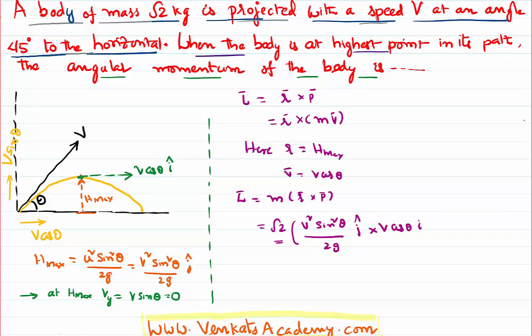Therefore what will be our answer is root 2 V square, V cube sin square theta by 2g j cap cross i cap. We have proved this in vectors.